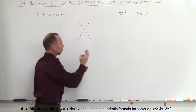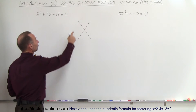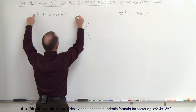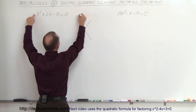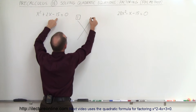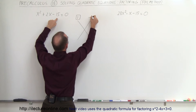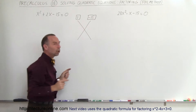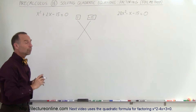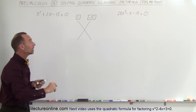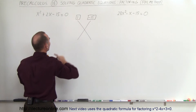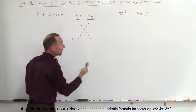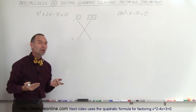Think of two FOILs crossed like that. On the first FOIL we're going to write the number in front of the x squared term. On the second FOIL we're going to write the constant term, minus 15. Now you have to think about all the possible combinations when you multiply two numbers together to get a 1. Of course there's only one choice: 1 and 1. But on the negative 15 there are a number of choices.